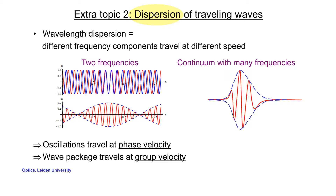In this web clip, we'll discuss dispersion of traveling waves. Dispersion occurs when the wave contains many frequency components and where the different frequency components or different wavelength components travel at different speeds. The consequence is that the wave will change its shape — it will disperse.